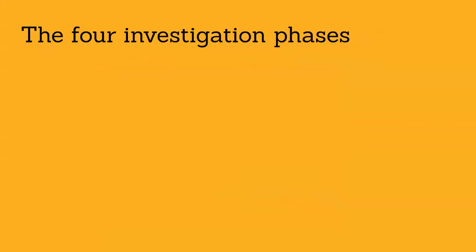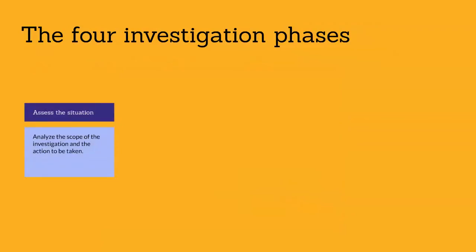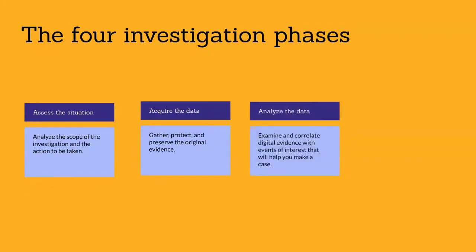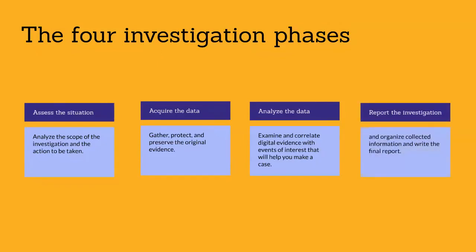The phases can be summarized as follows. The first phase is assess the situation: analyze the scope of the investigation and the action to be taken. The second phase is acquire the data: gather, protect, and preserve the original evidence. The third phase is analyze the data: examine and correlate digital evidence with the events of interest to help make a case. The fourth and last phase is report the investigation: gather and organize collected information and write the final report.